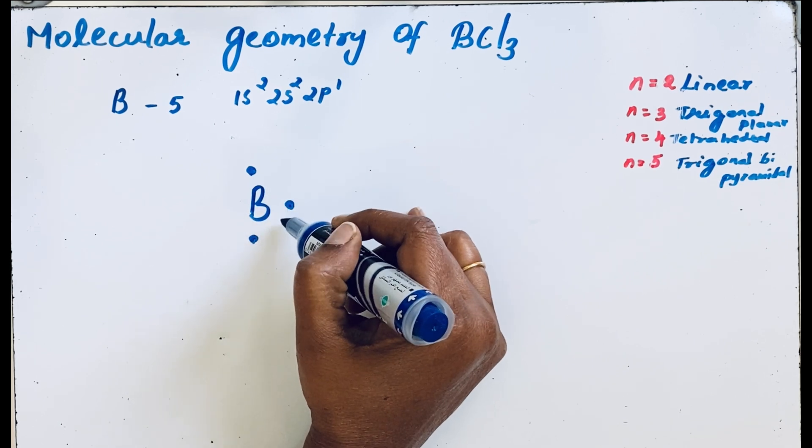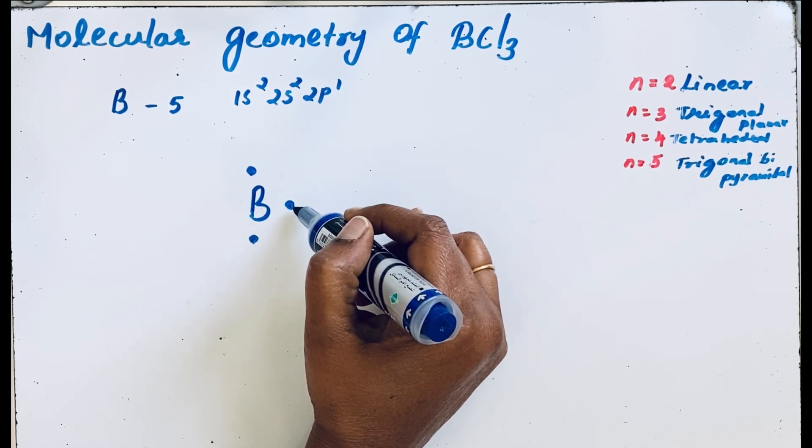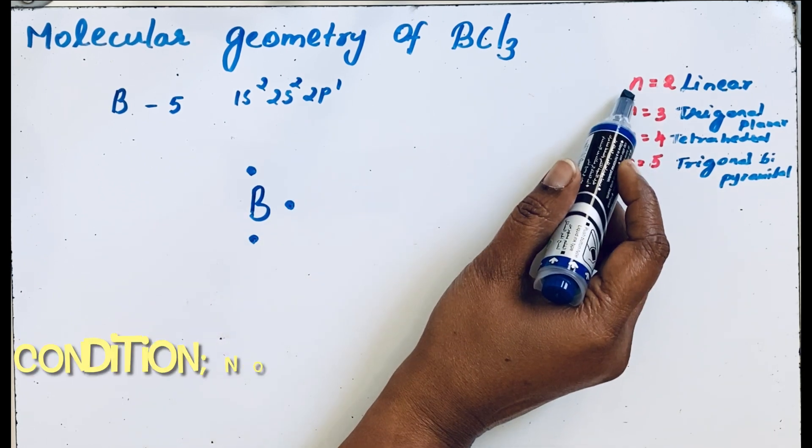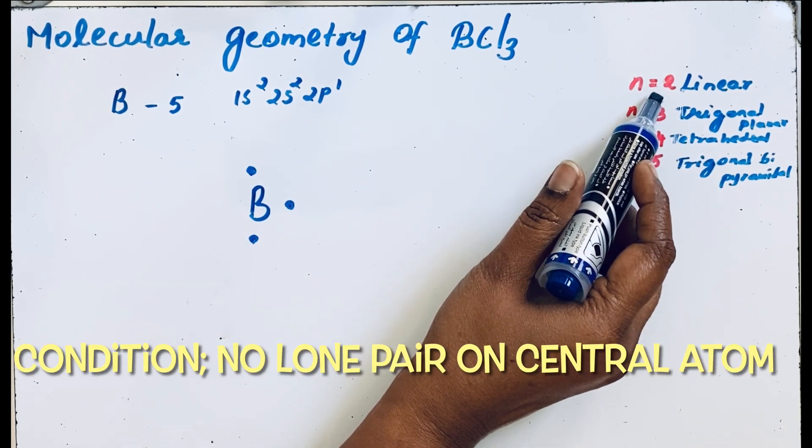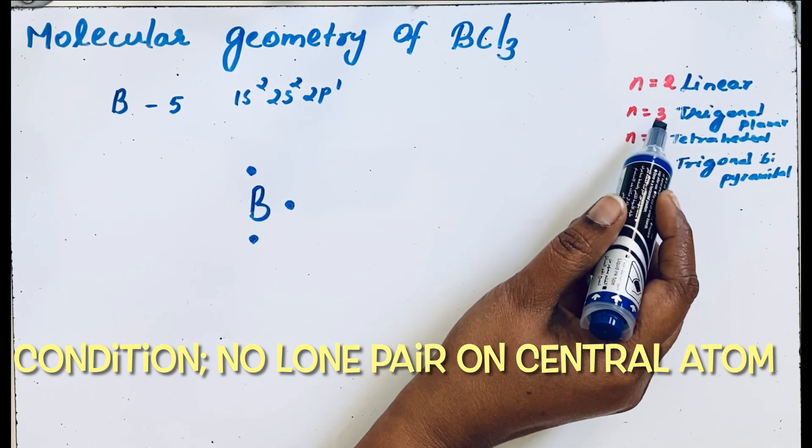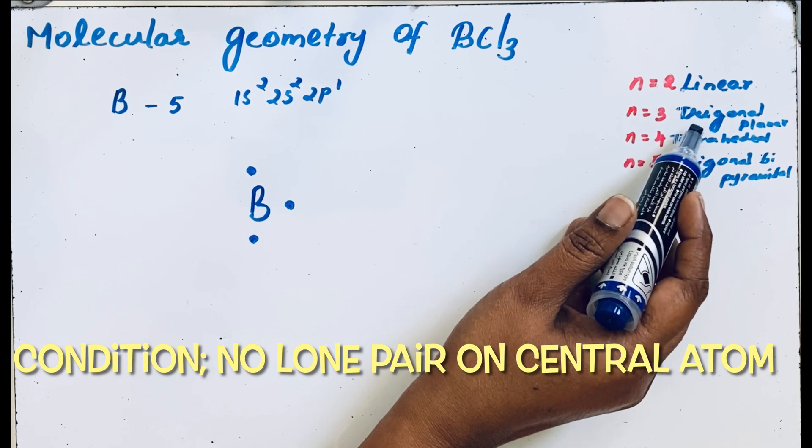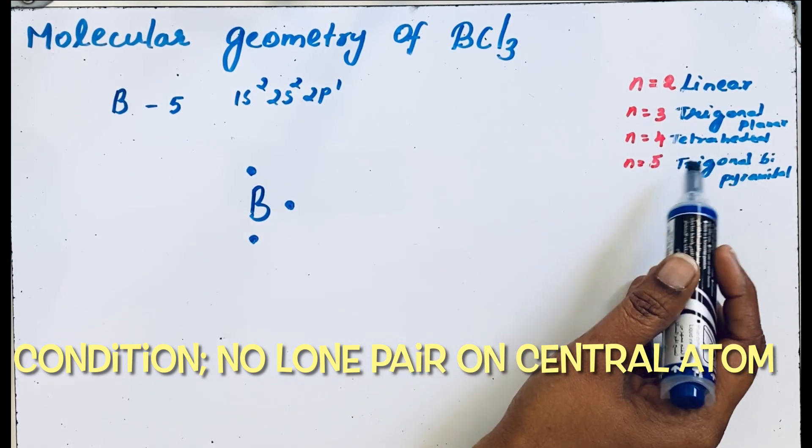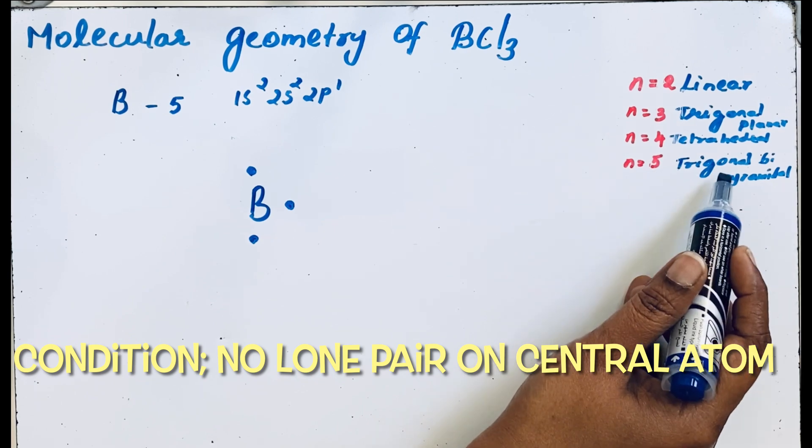Since there are three valence electrons, it can form three bond pairs. Here n represents bond pair. If there are two bond pair electrons, then the shape is linear. If there are three bond pairs, then it is trigonal planar. If n equals 4, then tetrahedral. If n equals 5, trigonal bipyramidal.